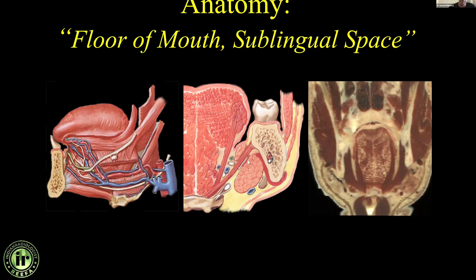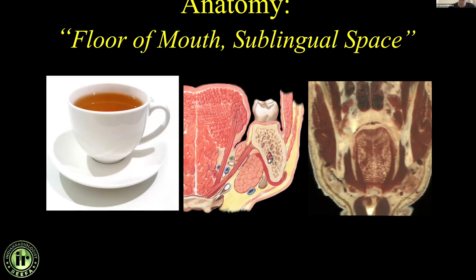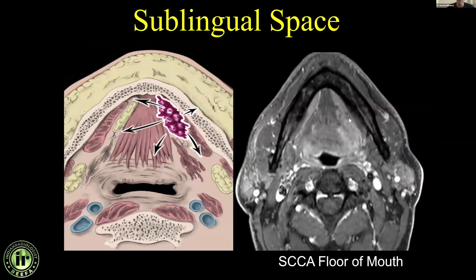This is half of the sublingual space — there's a mirror image on the other side, which is why the mylohyoid muscle is sometimes called the mylohyoid sling. I always think of the sublingual space as a teacup: the rim of the teacup is formed by the mandible, the wall by the mylohyoid muscle, and the base by the hyoid bone. Everything in the teacup is in the sublingual space. The most common tumor here is squamous cell carcinoma of the floor of the mouth.